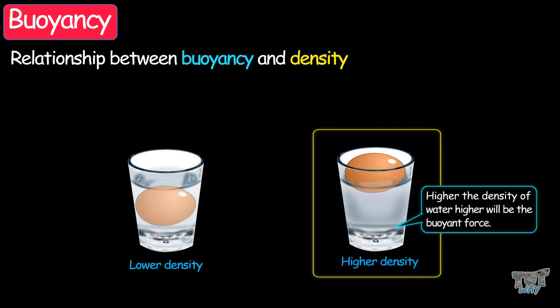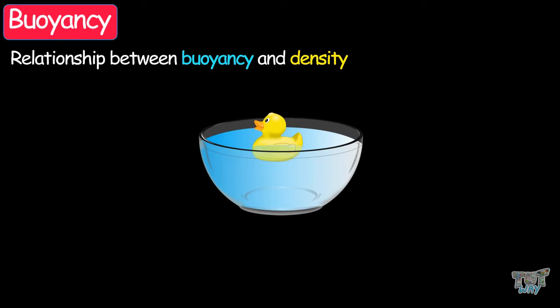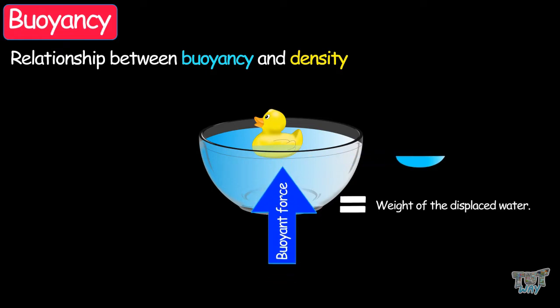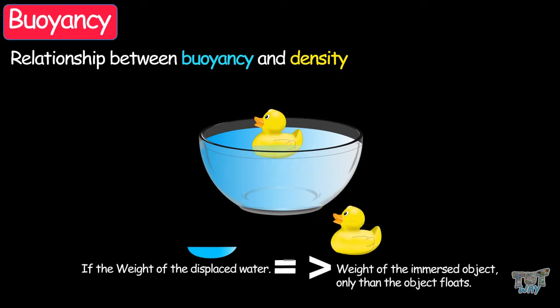Let's repeat what we learned. Anything immersed in water experiences a buoyant force equal to the weight of the displaced water. And if the weight of the displaced water is equal to or more than the weight of the immersed object, only then will the object float — and this is possible only if the immersed object has a lower density than the water.